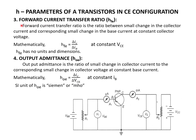The third parameter is the forward current ratio HFE. This is the ratio between small change in output current — where IC (collector current) is the output current — to small change in input current delta IB (base current), at constant VCE. Since this is the ratio of current to current, HFE has no units or dimensions.